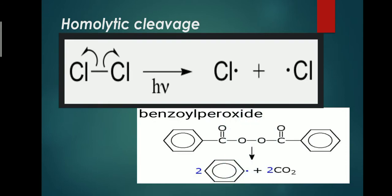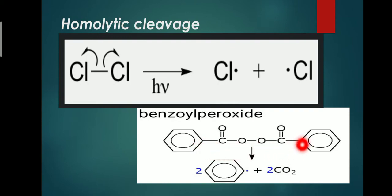Another example is benzoyl peroxide. In the presence of light, benzoyl peroxide decomposes. The bond breaks and forms a benzoyl free radical on each side, as the bond between the carbons breaks to form benzoyl free radicals.